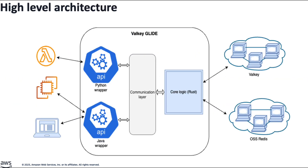Here is a high-level architecture of Glide. Glide is composed of three main components: the wrappers, the core, and the communication layer that connects them. Valky Glide was built using a core engine coded in Rust, complemented by language-specific bindings called wrappers, and a communication layer that connects it all.